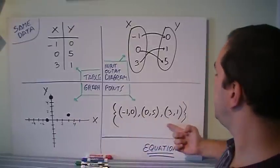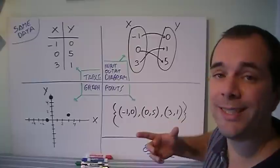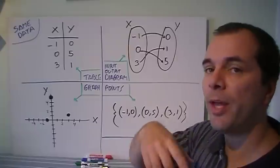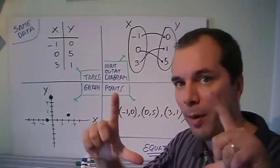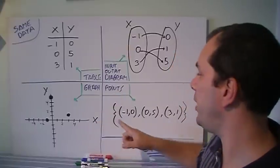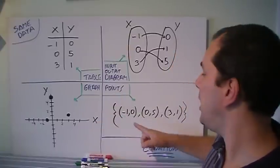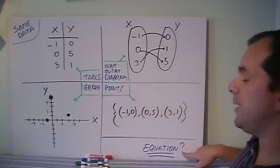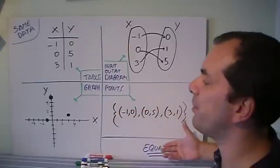And lastly, I can write it as points. It's a set of points. So I got squiggly brackets and then you remember that to put a point you need to use brackets and a comma in the middle for the x and the y, or the input and the output. And that's minus 1, 0, 0, 5, and 3, 1. The only one I didn't use here is the equation, because there's not an equation for this.